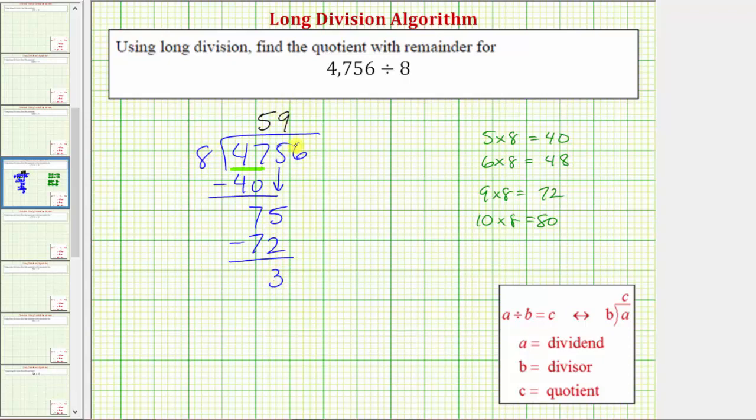We have one remaining digit in the dividend, so we bring that down. And now we consider 36. We need to determine how many eighths are in 36. Well, because 4 times 8 is equal to 32, and 32 is less than 36, we know there's at least 4 eighths in 36.